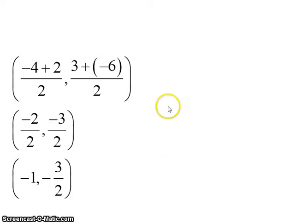So plugging in our values, we get negative 2 over 2, negative 3 over 2. When we simplify, when we've got a negative sign inside of a fraction, we just move it out to the front or simplify it in case of this one. So our midpoint looks like the point negative 1, negative 3 halves.